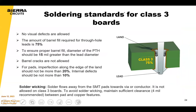For Class 3 assembly, during your manufacturing process you want to ensure Class 3 requirements are met: no visual defects are allowed, barrel fill must meet 75%, and we can X-ray the barrels to verify. That's different from a Class 2 board — again, in a high-reliability environment you can specify these on your assembly drawing without a full Class 3 requirement. I'd also recommend a discussion with our assembly process engineers to make sure the design of the plated through-hole via is appropriate for that component.